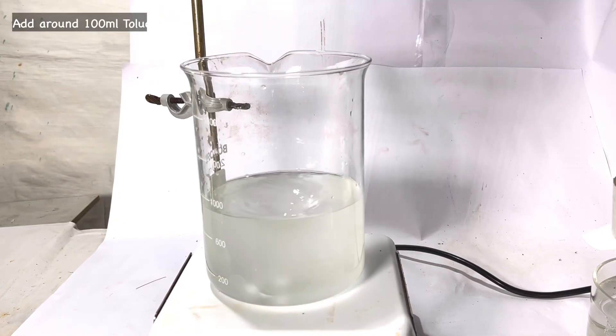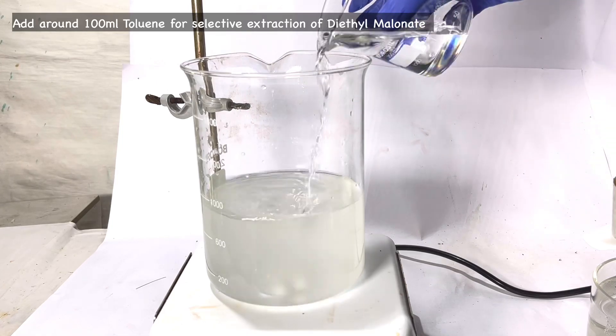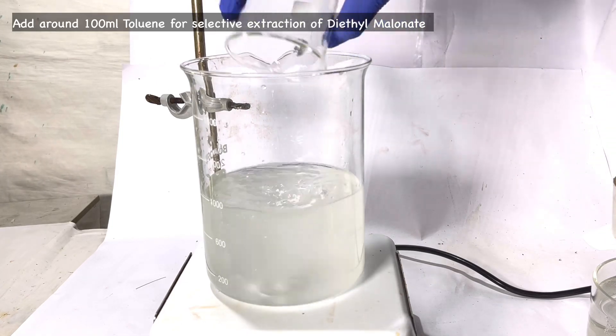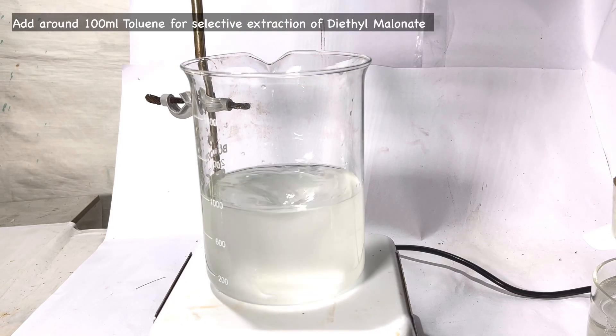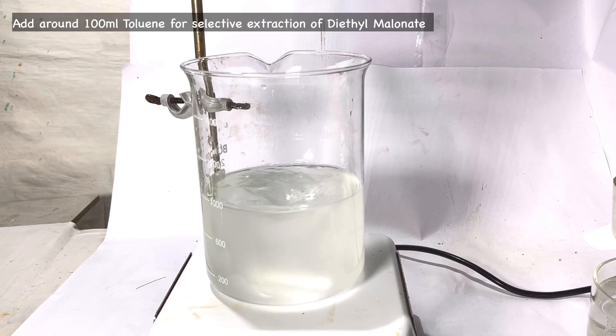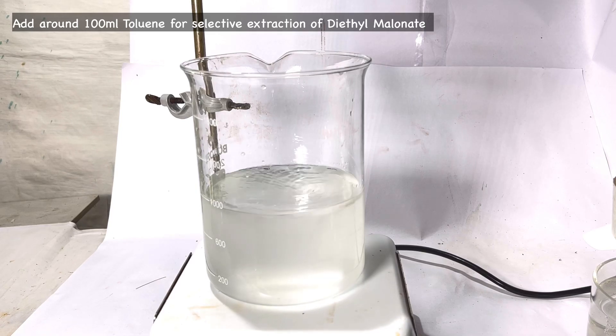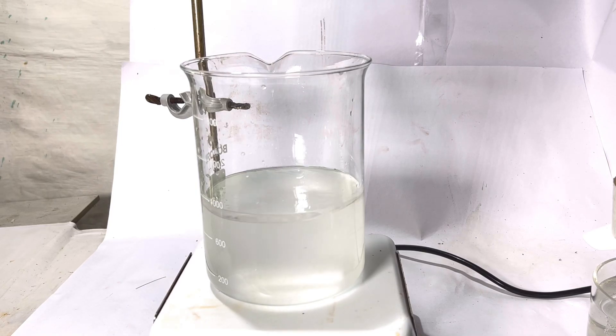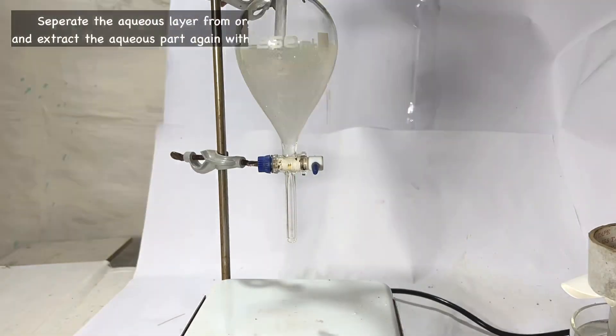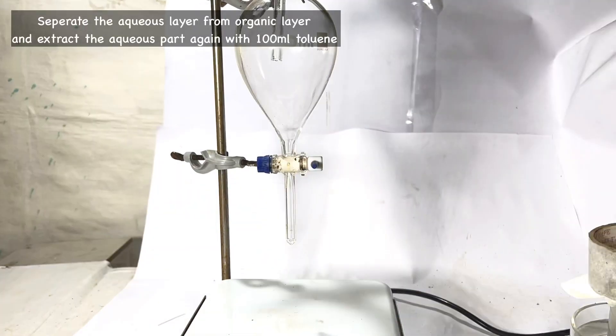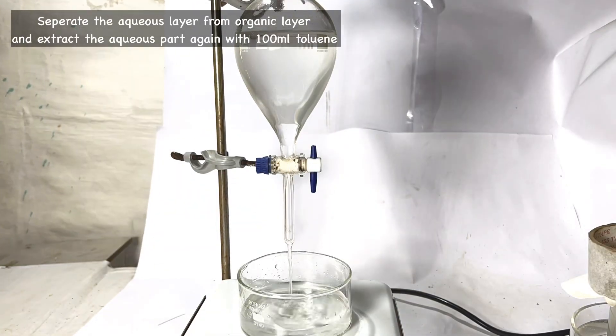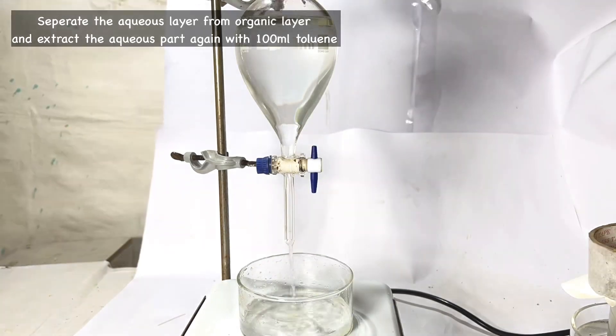Next we begin the solvent extraction of diethyl malonate. Initially around 100 milliliters of toluene was added to the beaker and it was vigorously stirred. Diethyl malonate has more affinity to toluene than the aqueous layer, hence diethyl malonate is selectively dissolved into the toluene layer. Later the contents of the beaker were poured into a separatory funnel and the upper toluene layer was collected. The lower aqueous layer was extracted a second time with toluene and the second toluene layer was combined with the previous toluene extract.